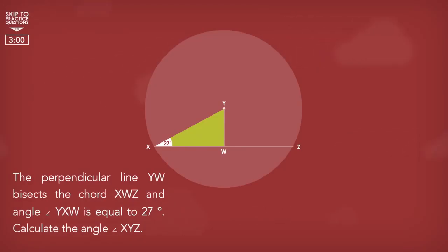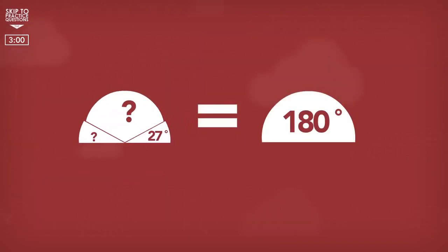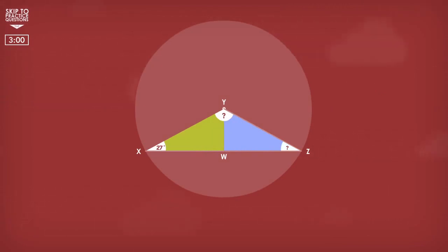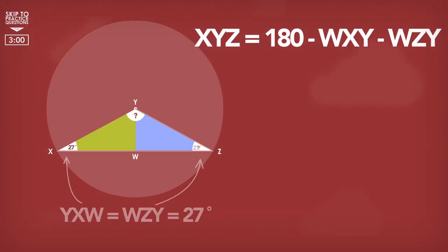A question you could get based on this theorem is: if the perpendicular line YW bisects the chord XWZ, and angle YXW is equal to 27 degrees, calculate the angle XYZ. Using the rule that all angles on a triangle add up to 180 degrees, we can find angle XYZ by subtracting angle WXY and angle WZY from 180. From the explanation previously, we can easily conclude that angle YXW is the same as WZY, both equaling 27 degrees.